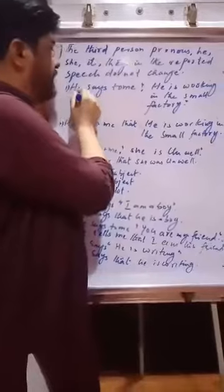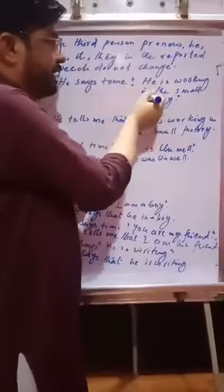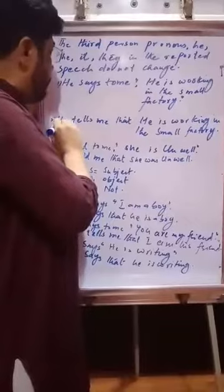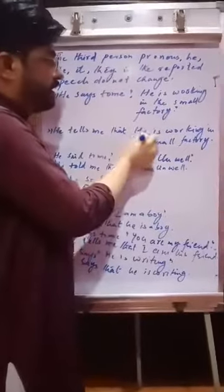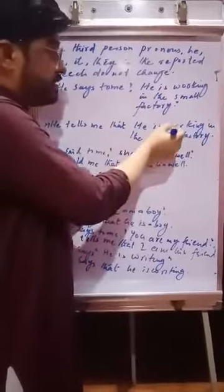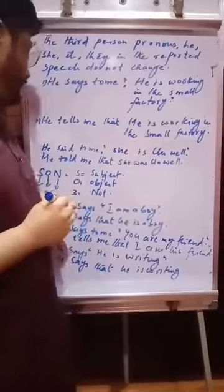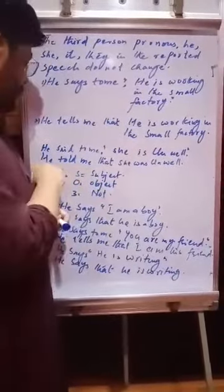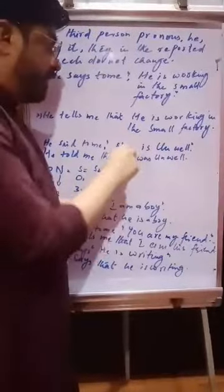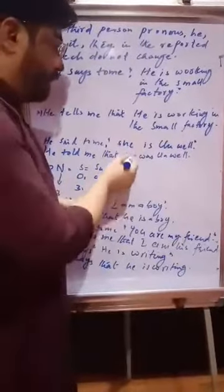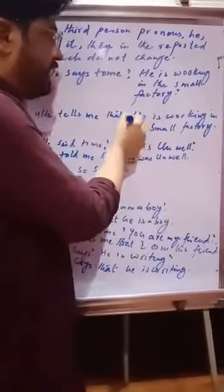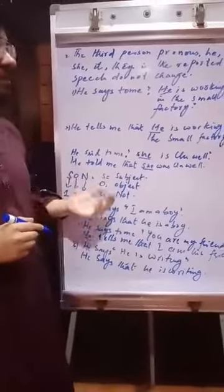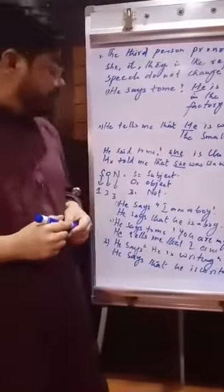Example: 'He says to me he is working in the small factory.' It should be: 'He tells me that he is working at the small factory.' Another example: 'He said to me she is unwell' becomes 'He told me that she was unwell.' Here, she and he remain the same because they are third person pronouns.